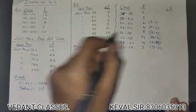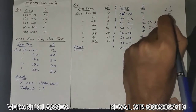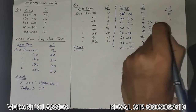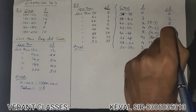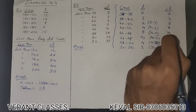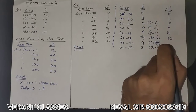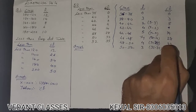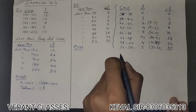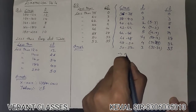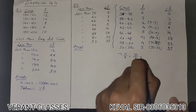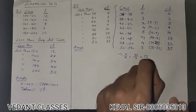The cumulative frequency table is: 0, 3, 5, 9, 14, 28, 32, 35. Now we determine n/2, which is 35/2 = 17.5.